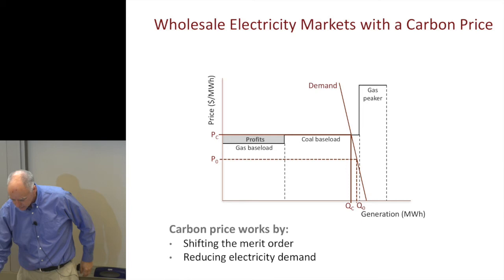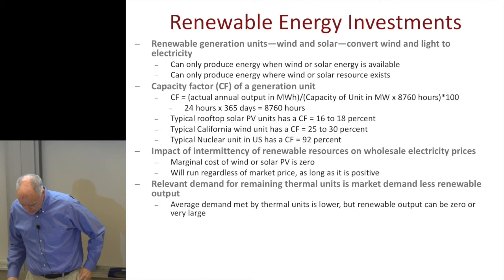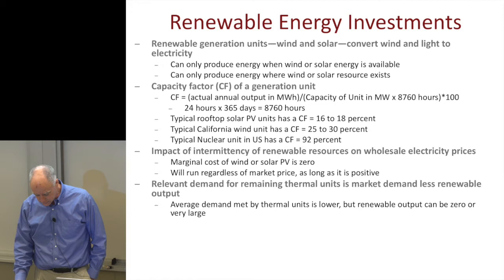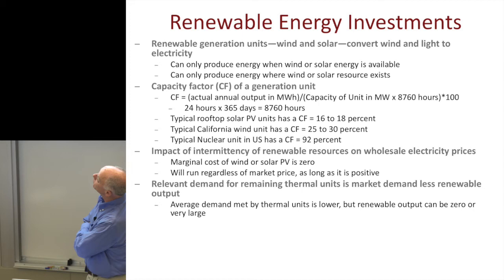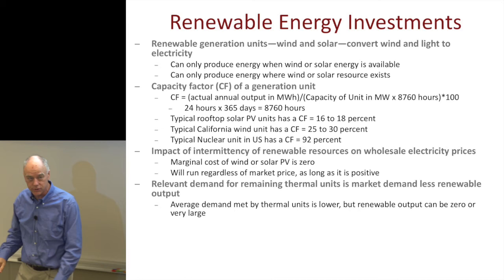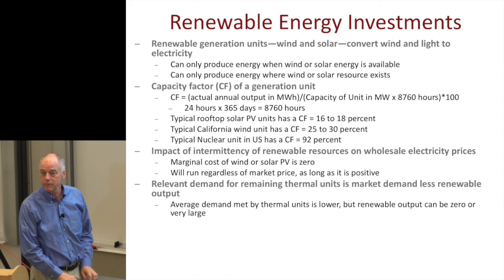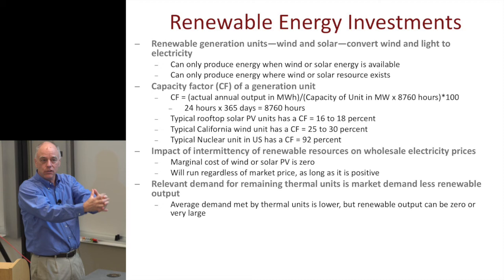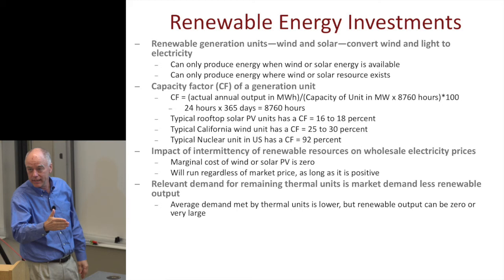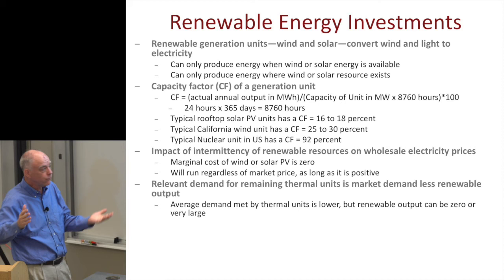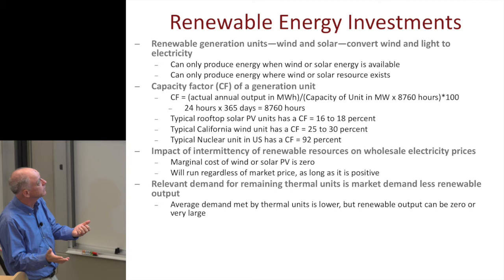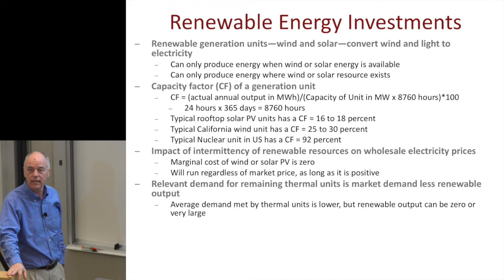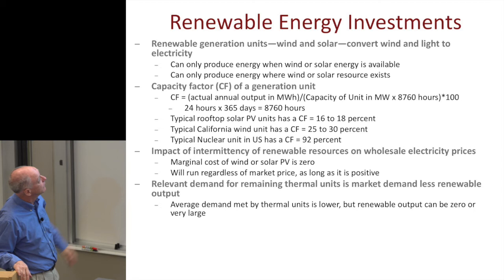Renewable energy presents a big challenge: you can only produce it when and where it's available. A key metric is the capacity factor — actual annual output divided by what the unit would produce running 24/7 all year. A typical California solar unit has a capacity factor of about 16 to 18 percent. A typical California wind unit is about 25 to 30 percent. By contrast, a nuclear unit in the United States is about 92 percent — very reliable. The great thing about renewables is that, like nuclear, they are zero-carbon, but they're also zero marginal cost.